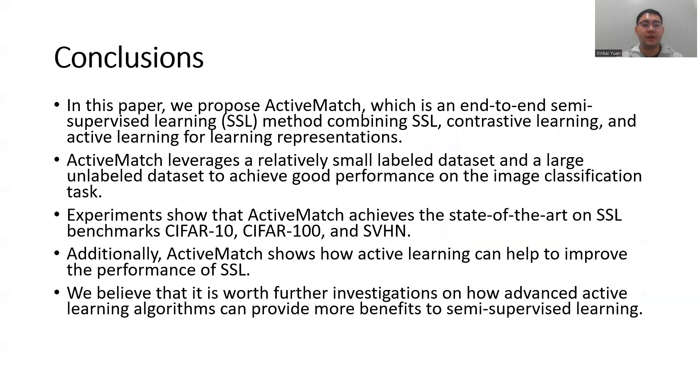In conclusion, in this paper, we propose ActiveMatch, which is an end-to-end semi-supervised learning method combining semi-supervised learning, contrastive learning, and active learning for learning image representations. ActiveMatch leverages a relatively small labeled dataset and a large unlabeled dataset for training to achieve good performance on the image classification task.